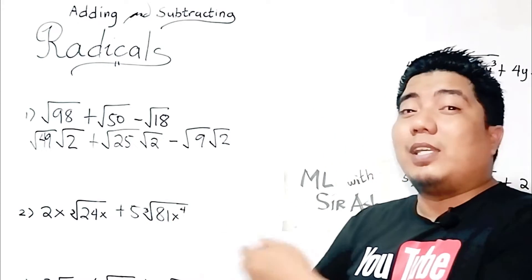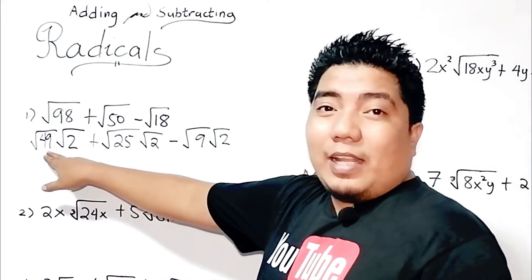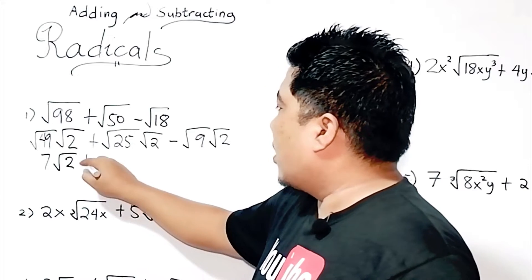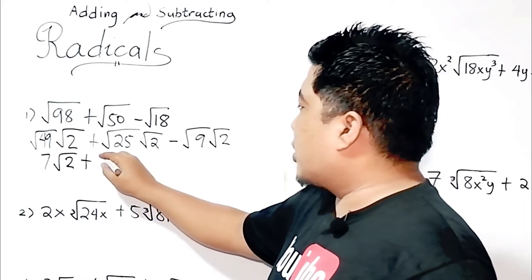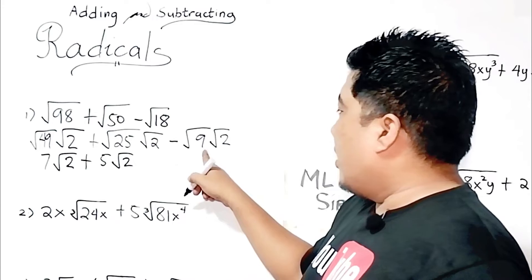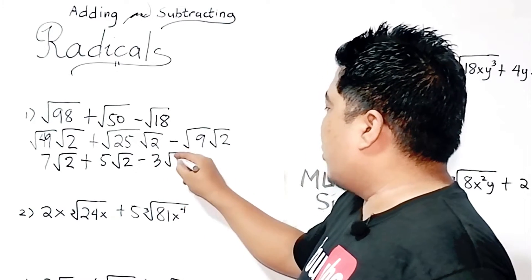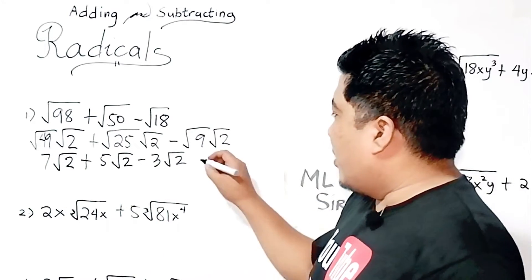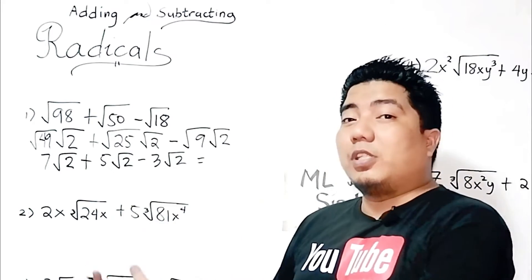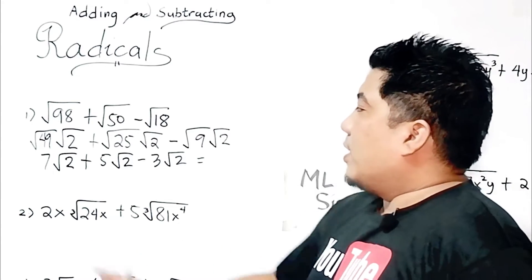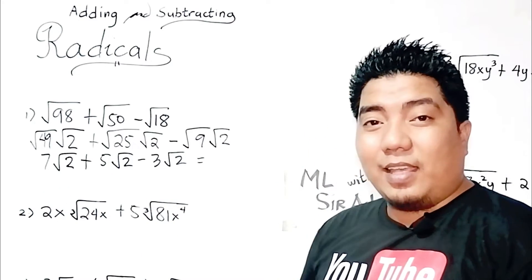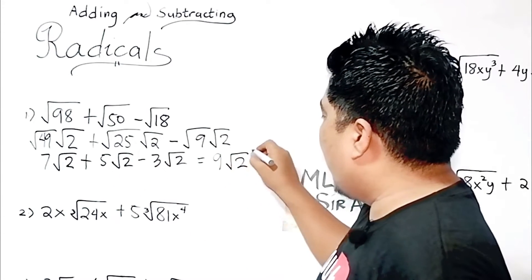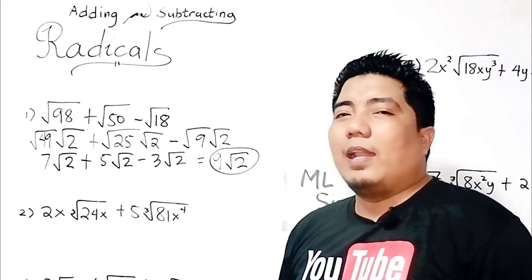Now we simplify further. 49 is a perfect square, so that is 7, giving us 7 square root of 2. 25 is a perfect square, so that is 5 square root of 2. And 9 is a perfect square, giving us 3 square root of 2. Now I have three terms with the same radicand, so these are like terms. So 7 plus 5 is 12, and 12 minus 3 is 9. The final answer is 9 square root of 2.